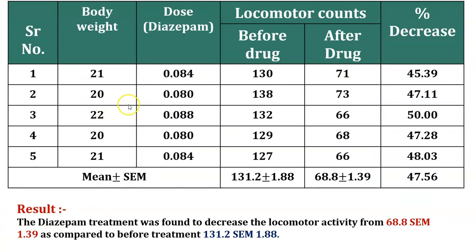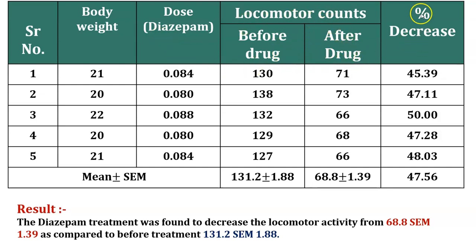Now this is the observation table. In serial number one, this is the number of animals used for the practical. The columns include body weight, then the dose calculated from the dose strength of diazepam, locomotor count before drug, locomotor count after drug, and from that we calculate the percent decrease using the formula.